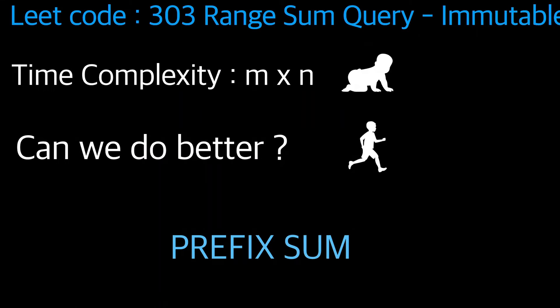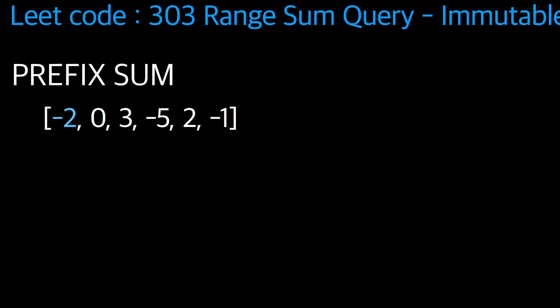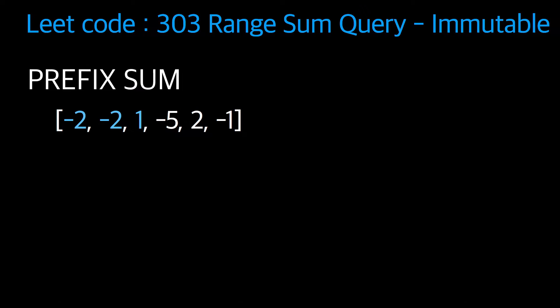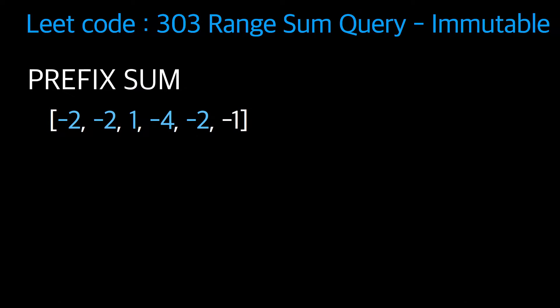I will now explain the prefix sum concept. Take the original array: minus two, zero, three, minus five, two, minus one. We keep the first element as minus two. Then take minus two and add it to the next element: minus two plus zero equals minus two. Take that updated minus two and add to the next: minus two plus three equals one. Then one plus minus five equals minus four. Then minus four plus two equals minus two. Then minus two plus minus one equals minus three.